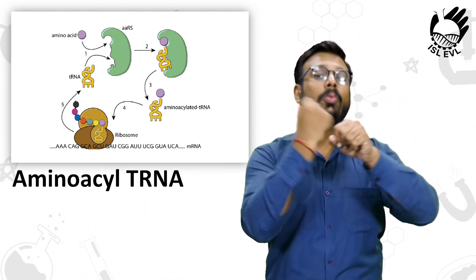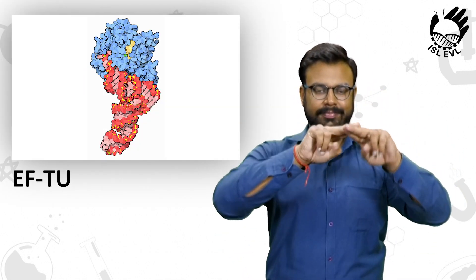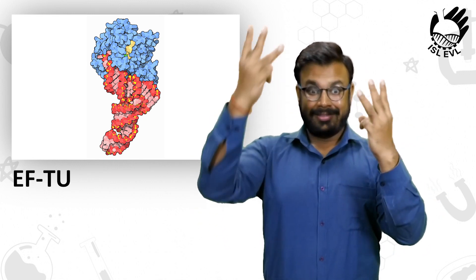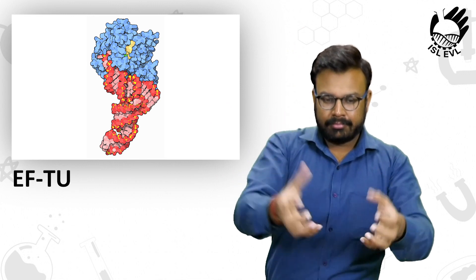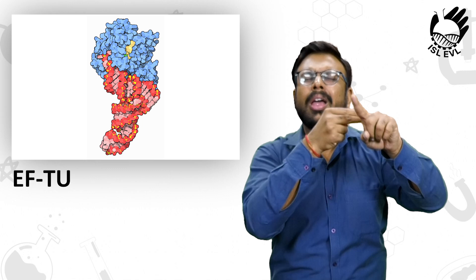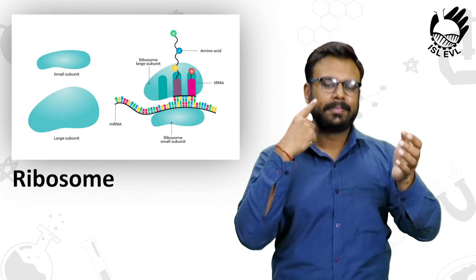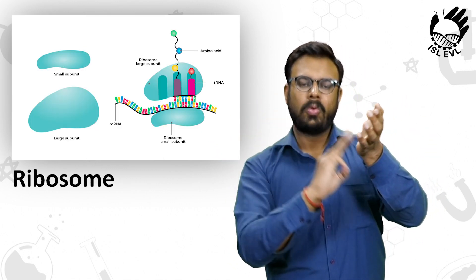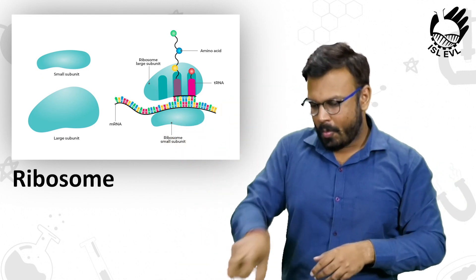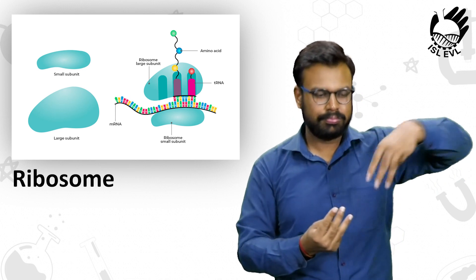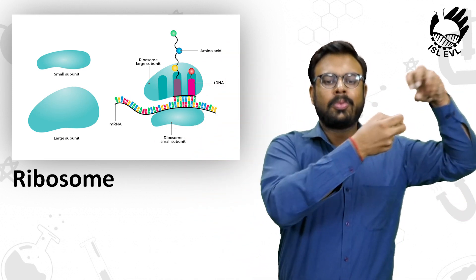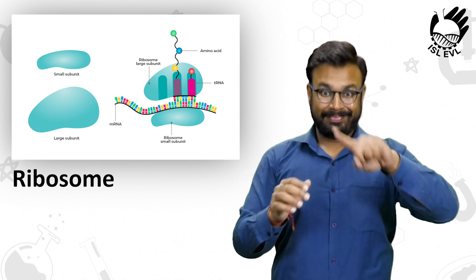Then we have the EF2, which brings the amino acid-bound tRNA to the ribosome. Ribosome brings all of these components together and keeps adding amino acids one at a time in the sequence dictated by the design on the mRNA.